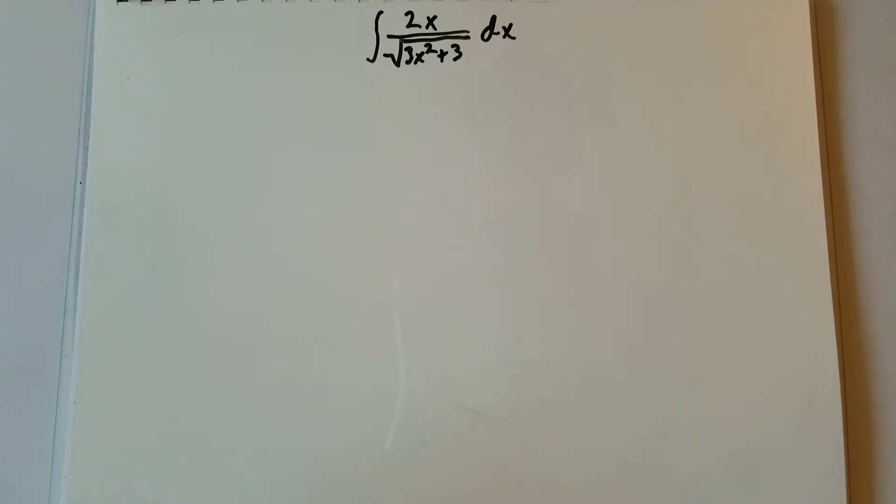So with this problem, we're going to have to use u substitution in order to solve it. If we were to pick 2x as our u, the derivative of that would just be 2, and we wouldn't be able to cancel anything out. So we're going to have to take what's inside the square root and make that our u.